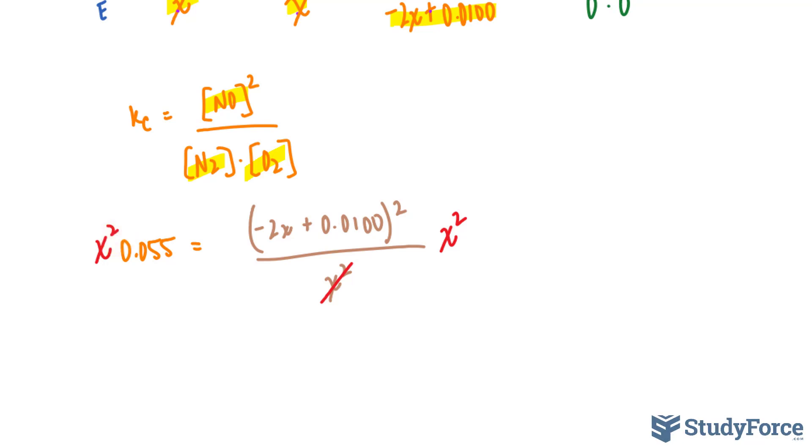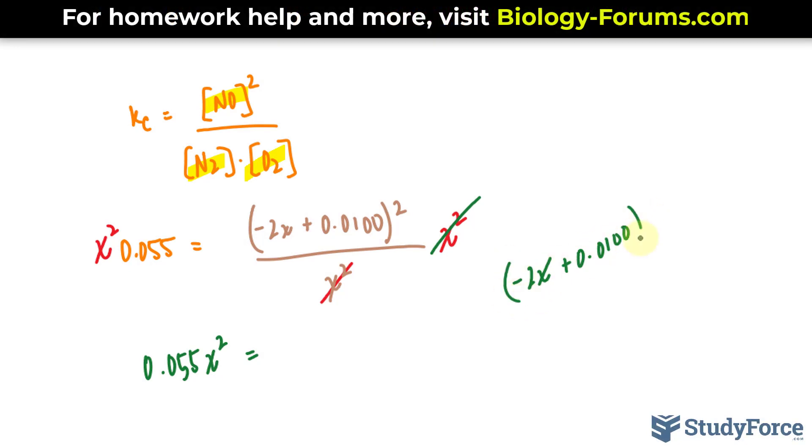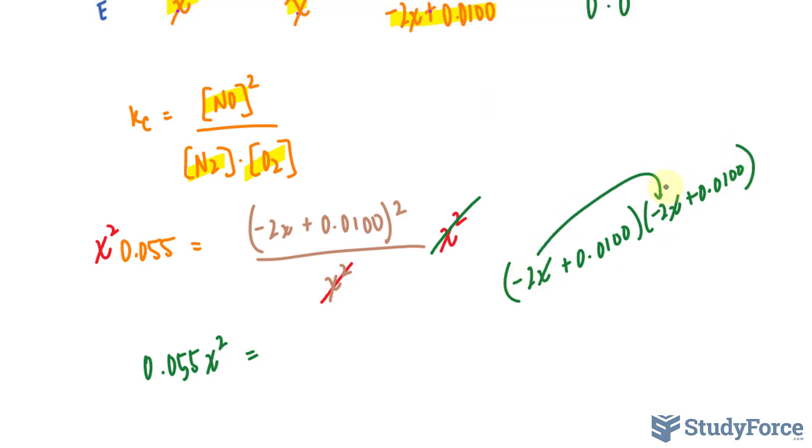I just want to try something different this time. So that cancels out. We're left with 0.055X squared is equal to what's on the right side. And I will actually expand this expression where I have negative 2X plus 0.0100. And I'll rewrite it because I will be expanding.